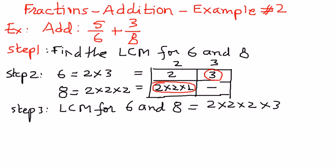Therefore, this value is going to be equal to: 2 times 2 is 4, 4 times 2 is 8, 8 times 3 is equal to 24. So let us put a circle around it.